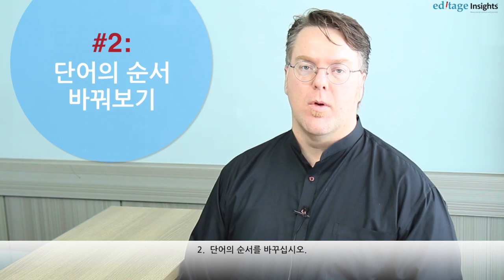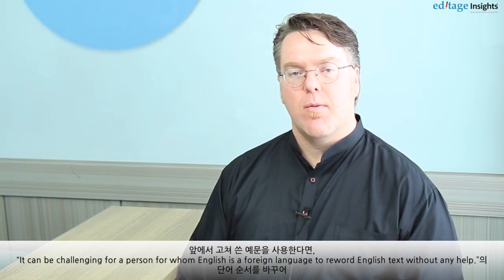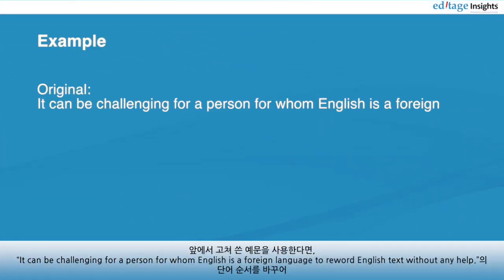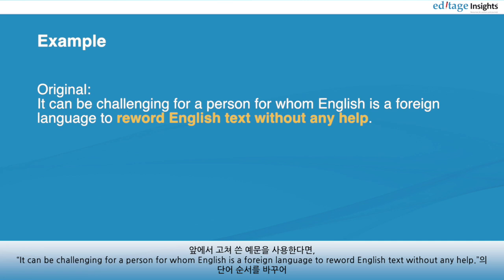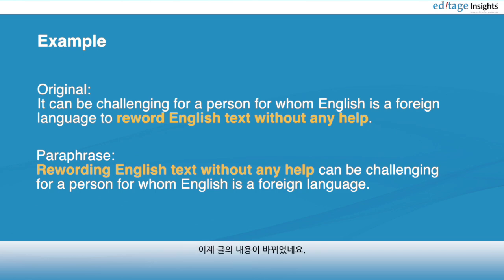Number two, you can change the order of the words. Using the example that we've already paraphrased, the original is: 'It can be challenging for a person for whom English is a foreign language to reword English text without any help.' The paraphrase then becomes: 'Rewording English text without any help can be challenging for a person for whom English is a foreign language.' We've flipped the text.